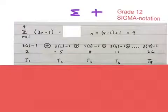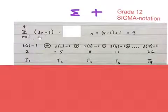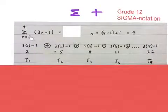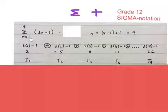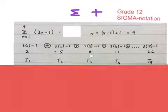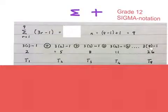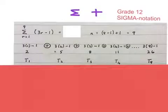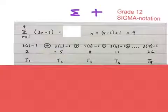Next, we have to find the terms of the pattern. We take that number, substitute it in, and get an answer. Take the number after that, which is 2, substitute it in and get the answer. Take the next number, which is 3, put it in the place of r, work it out, and keep going until you get to 9. So term 1 will be 2, term 2 will be 5, term 3 will be 8, and so on.